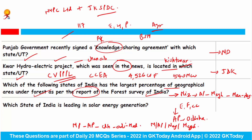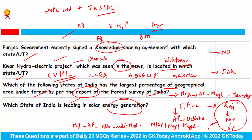Which state of India is leading in solar energy generation? This state is Rajasthan, followed by Karnataka and then Andhra Pradesh. Together, all three states account for 50% of the total solar energy generation in India.